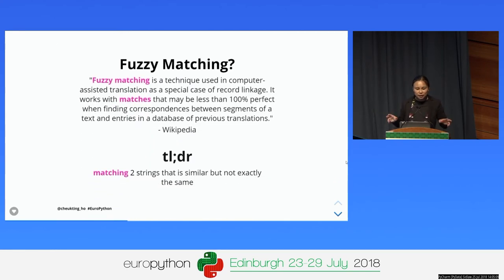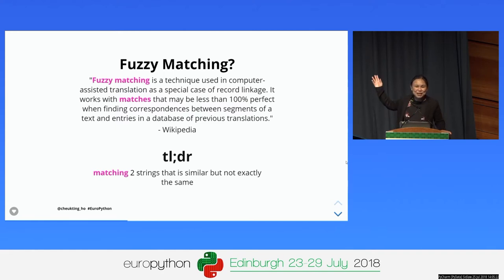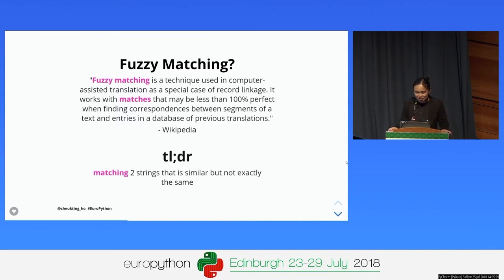I came across something called fuzzy matching - it's a funny name, you might think of cute fuzzy animals, but that's the Wikipedia definition. Basically what it means is: matching two strings that are not exactly the same, but finding a way to score how similar they are.